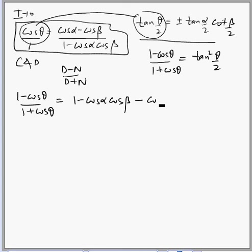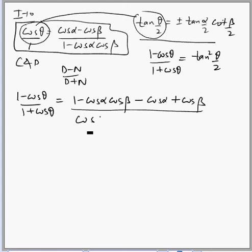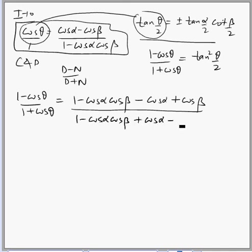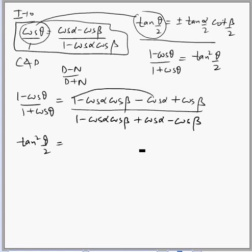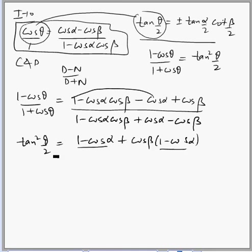And we apply the same operation on the right hand side to get: 1 minus cos α cos β minus cos α plus cos β, divided by 1 minus cos α cos β plus cos α minus cos β. Now this becomes tan²(θ/2), and we factorize the numerator: this is 1 minus cos α, and taking cos β common from the remaining two terms, we again get 1 minus cos α. So we can take 1 minus cos α common, and the other factor would be 1 plus cos β.